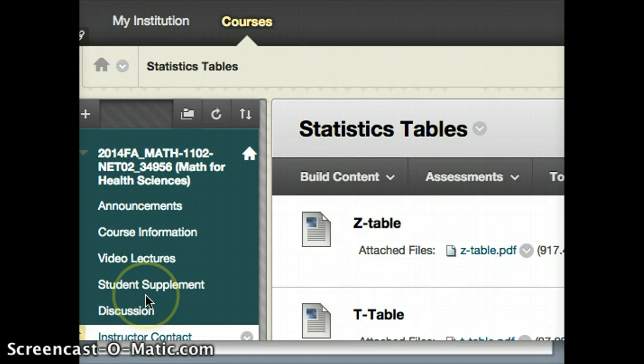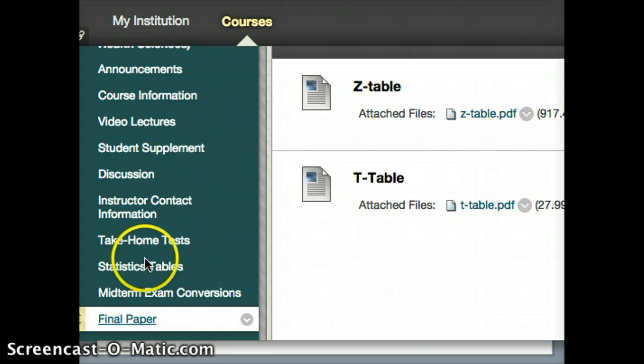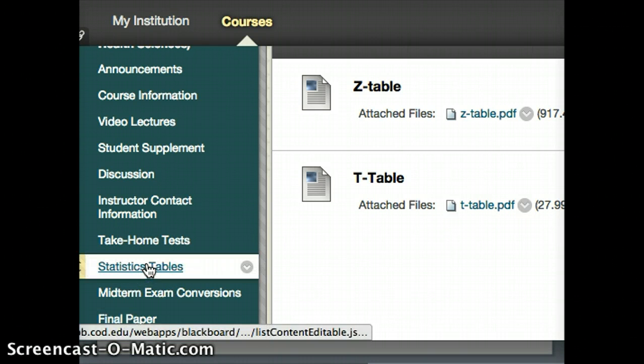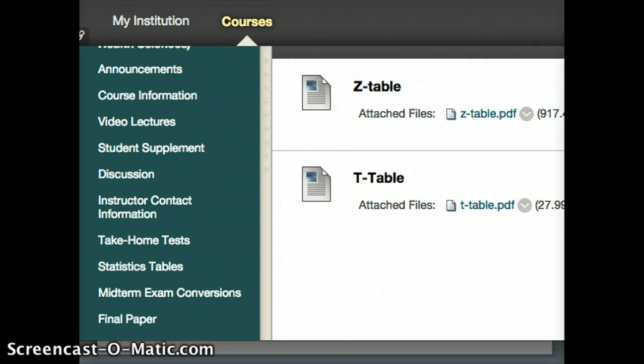So we go to Blackboard and we look on the left for statistics tables. And sure enough, we find it right here. So if we click on that, you will notice that we have a z-table and a t-table. And we've seen the z-table before. So I will click on the t-table and that will look like this.